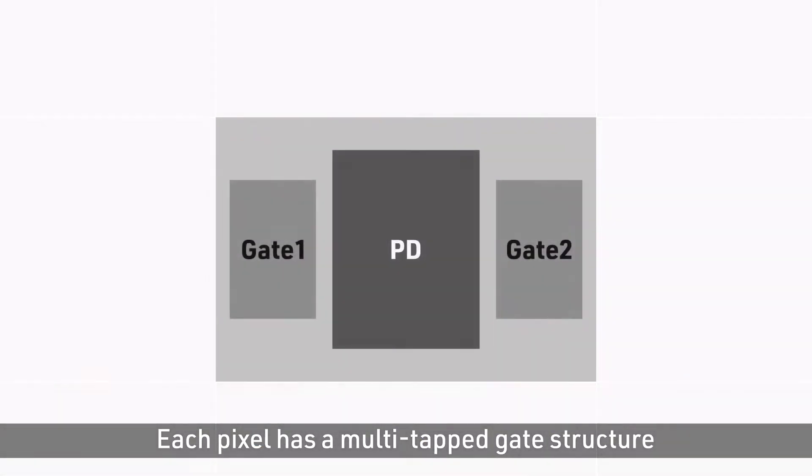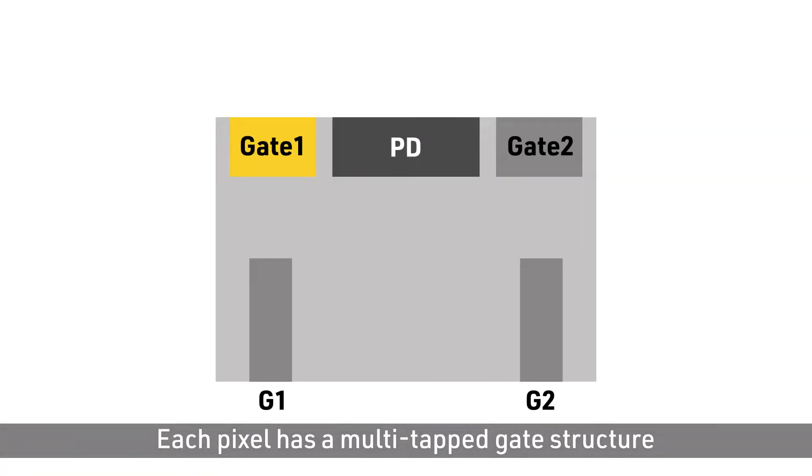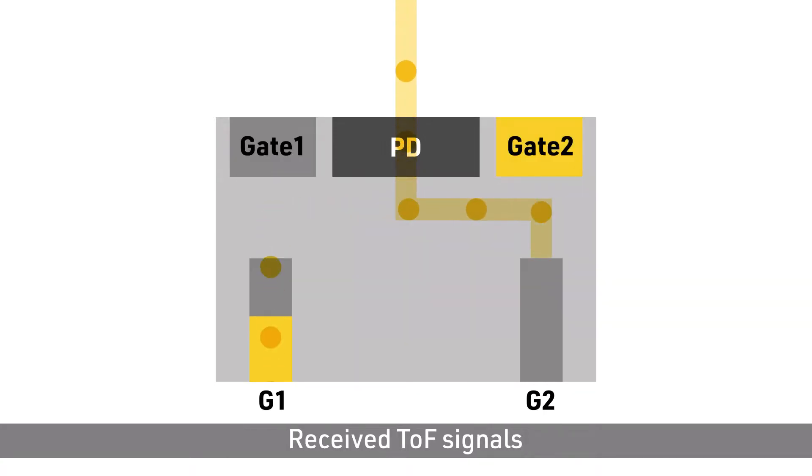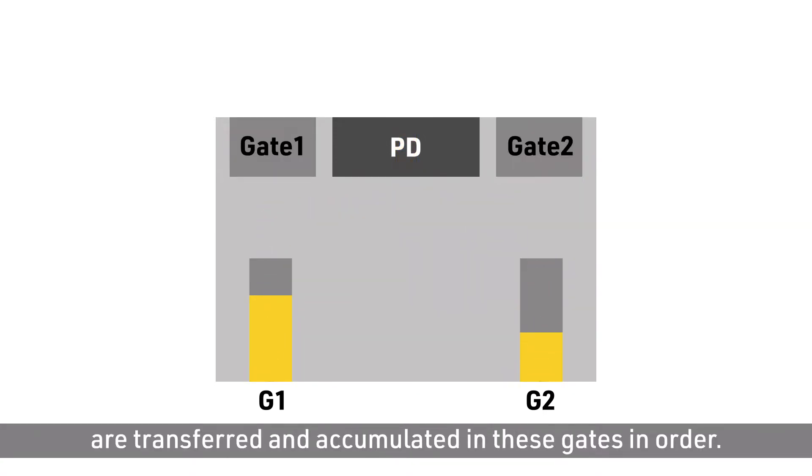Each pixel has a multi-tapped gate structure that distributes TOF signal light. Received TOF signals are transferred and accumulated in these gates in order.